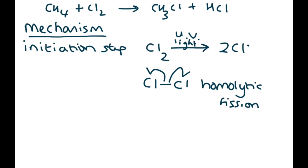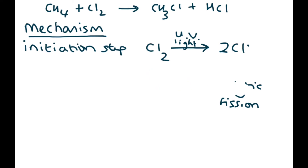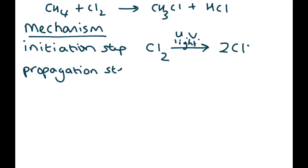So that's the first step — homolytic fission driven by high-energy UV light. The second step is called the propagation step. This is when you have methane reacting with a chlorine radical.